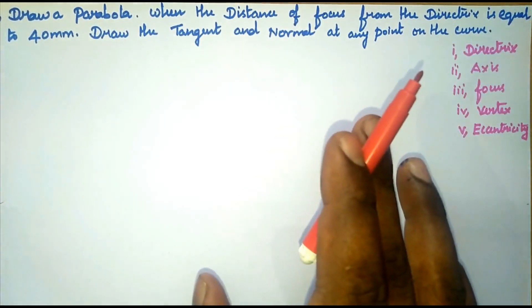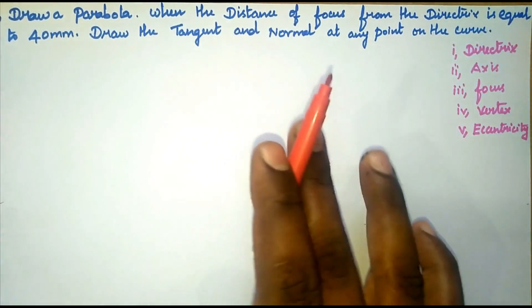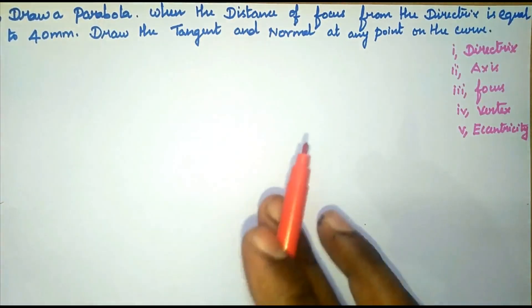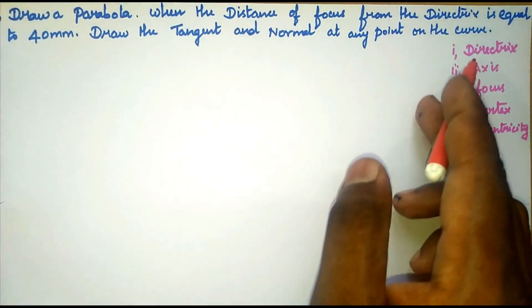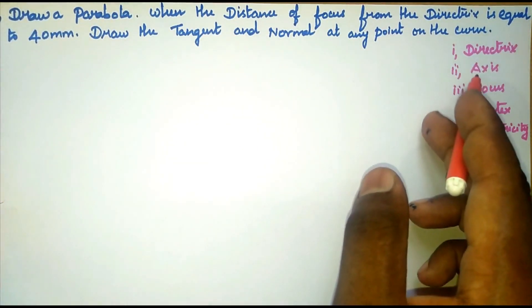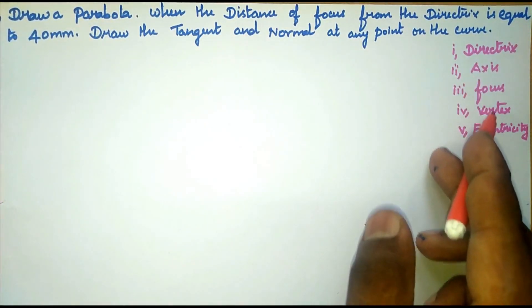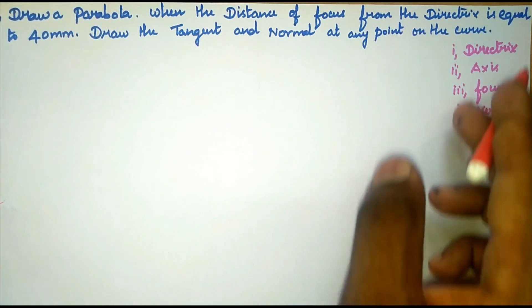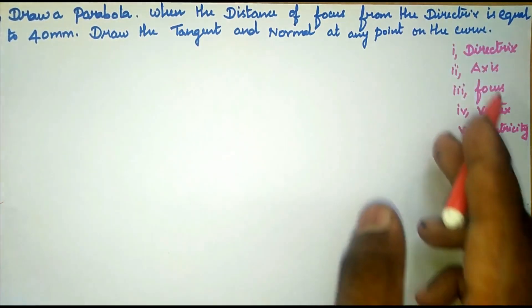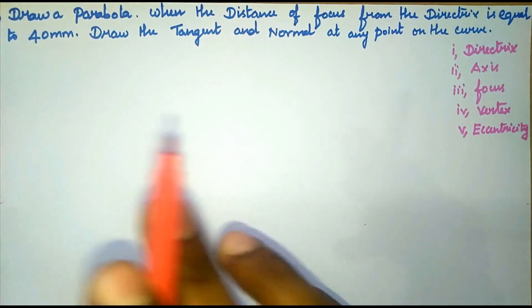In order to draw a parabola curve, we need to know certain terms. The first term is directrix, then axis, focus, vertex, and eccentricity. With the help of these five terms, we are going to draw a parabola curve.